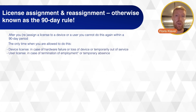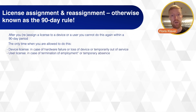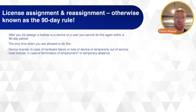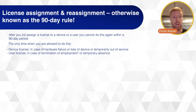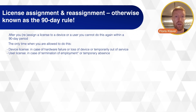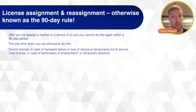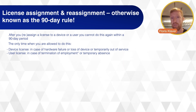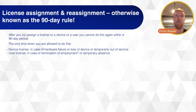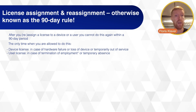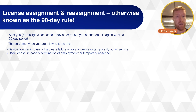There are some rules around when you are allowed to reassign early. For device licenses, if the hardware fails, there is a loss of device, or it is out of service temporarily, you are allowed to reassign it. In the case of a user license, if that person is fired, there is a termination of employment, or they are unavailable for a longer period of time — for instance, a sabbatical or a burnout — then you are able to reassign that license.